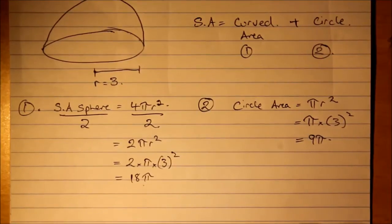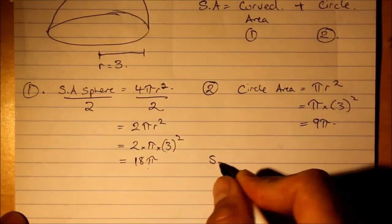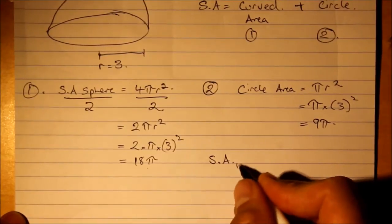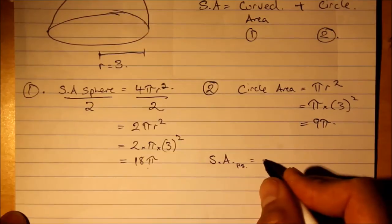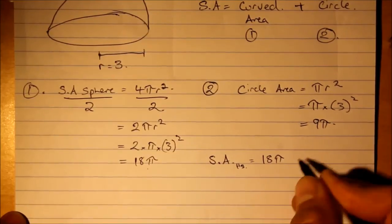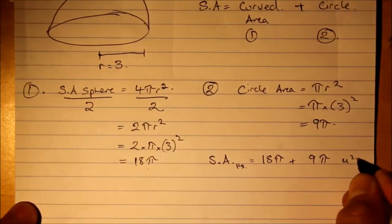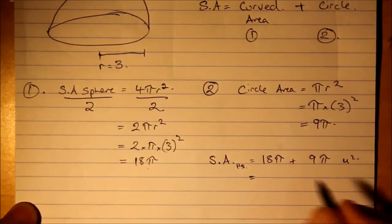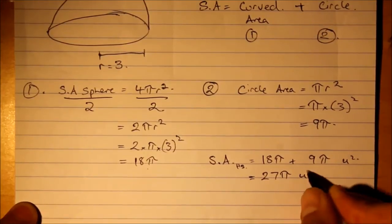Now, if we put it all together, the surface area of the hemisphere is equal to 18 pi plus 9 pi. This is units squared, which is 27 pi units squared.